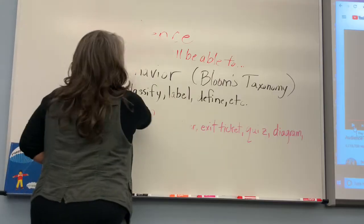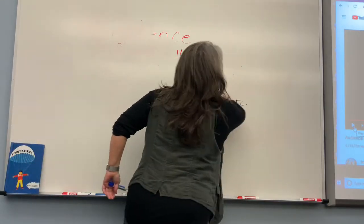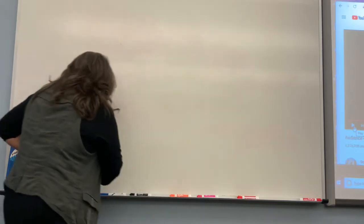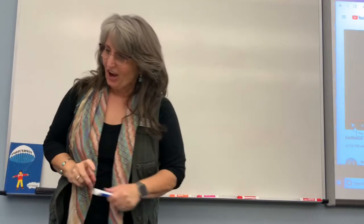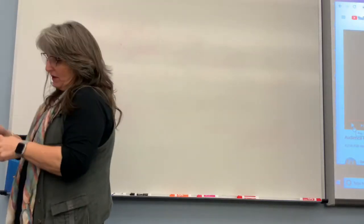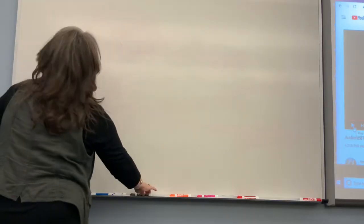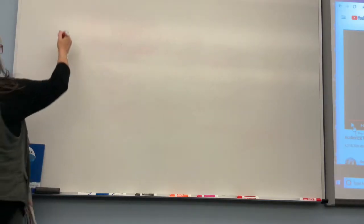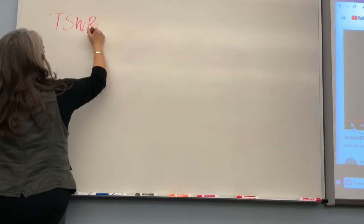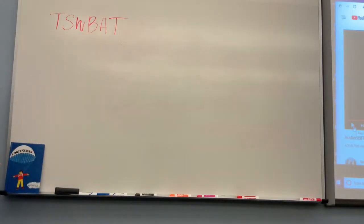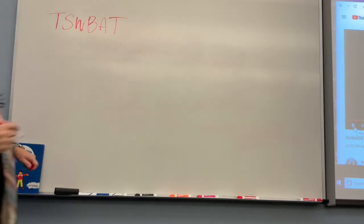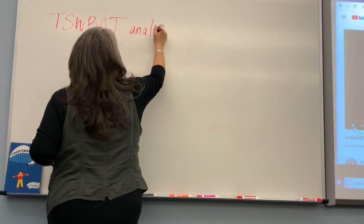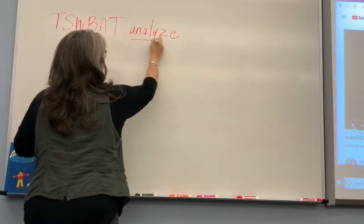Let's start writing. I'll abbreviate for time's sake. In red: 'the student will be able to.' We need a strong verb — 'analyze' is good. The behavior 'analyze' goes in black. I accidentally wrote my verb in red first — the teacher messed up! But that's okay, it happens to all of us. So: the student will be able to analyze — that is our behavior.